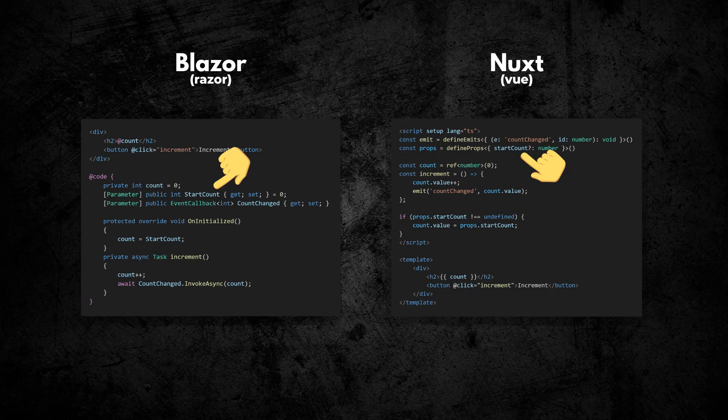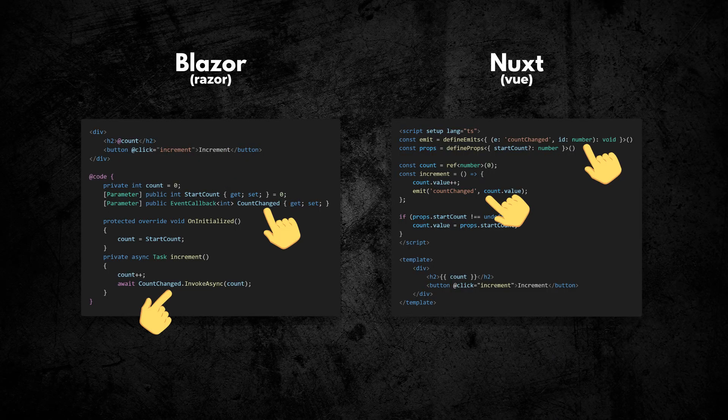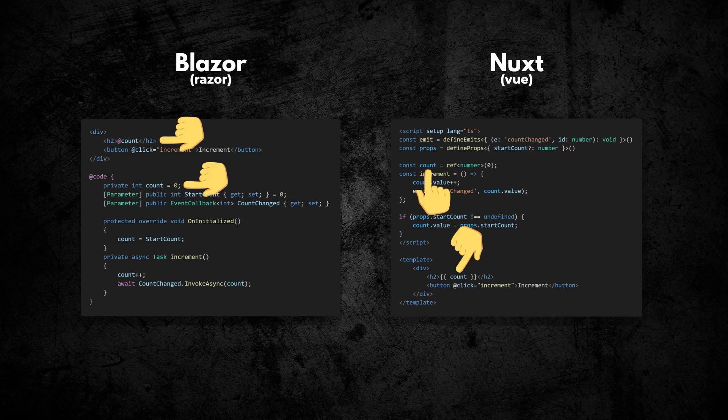While we're on the topic of components, let's talk basics. Parameters in Nuxt are the same — just different syntax. Emitting events out of components from child to parent is also supported, but again the syntax is going to be a little different. Model binding — it's all there.